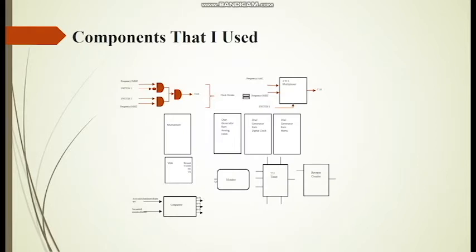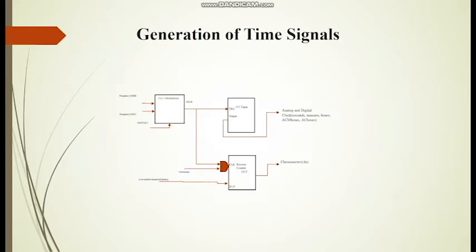Here the figure includes all components of the project. The figure demonstrates the block diagram of timer and chronometry and how they are both generated. According to the schematic, there are two signals coming to the multiplexer and there is a switch that is used to select one of the modes.